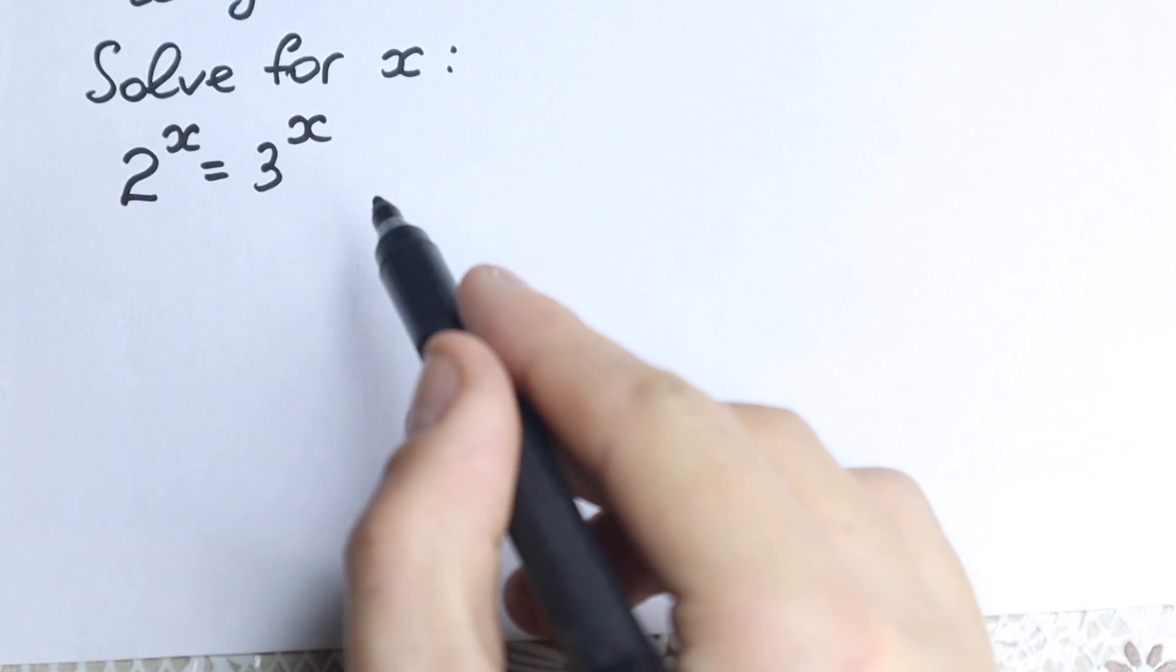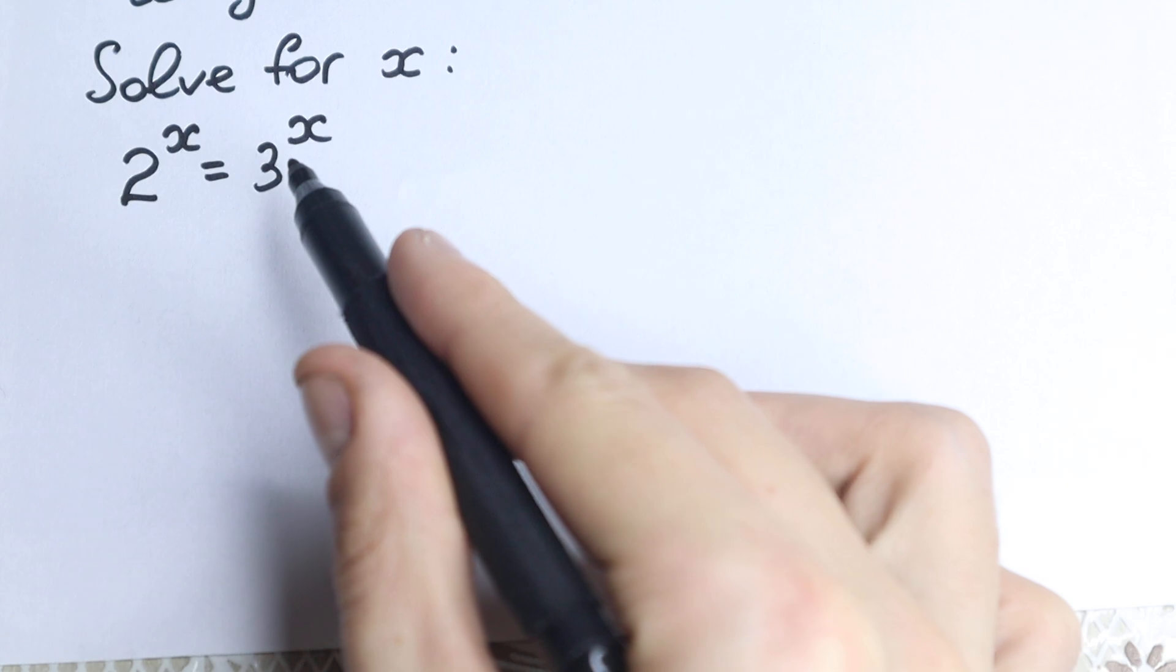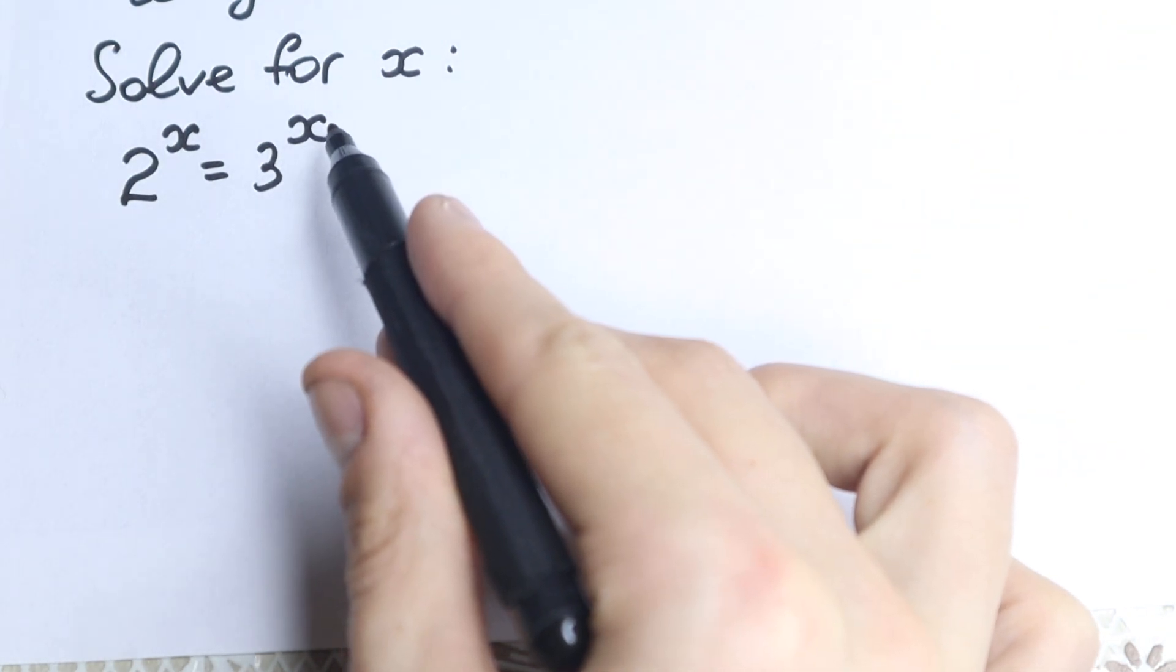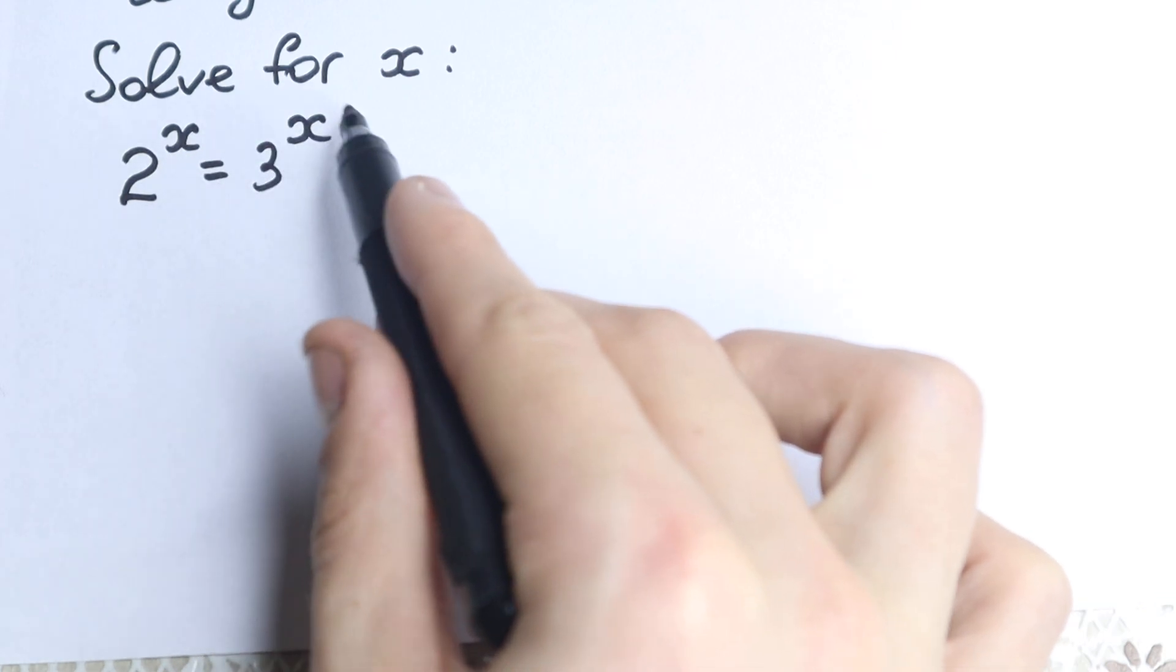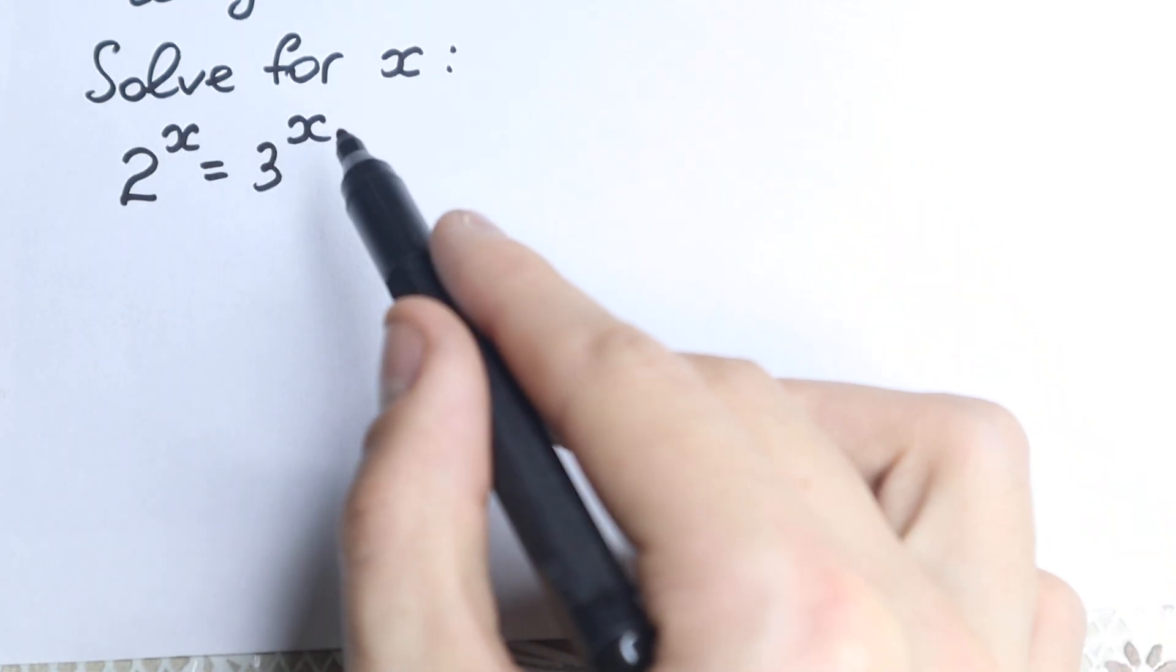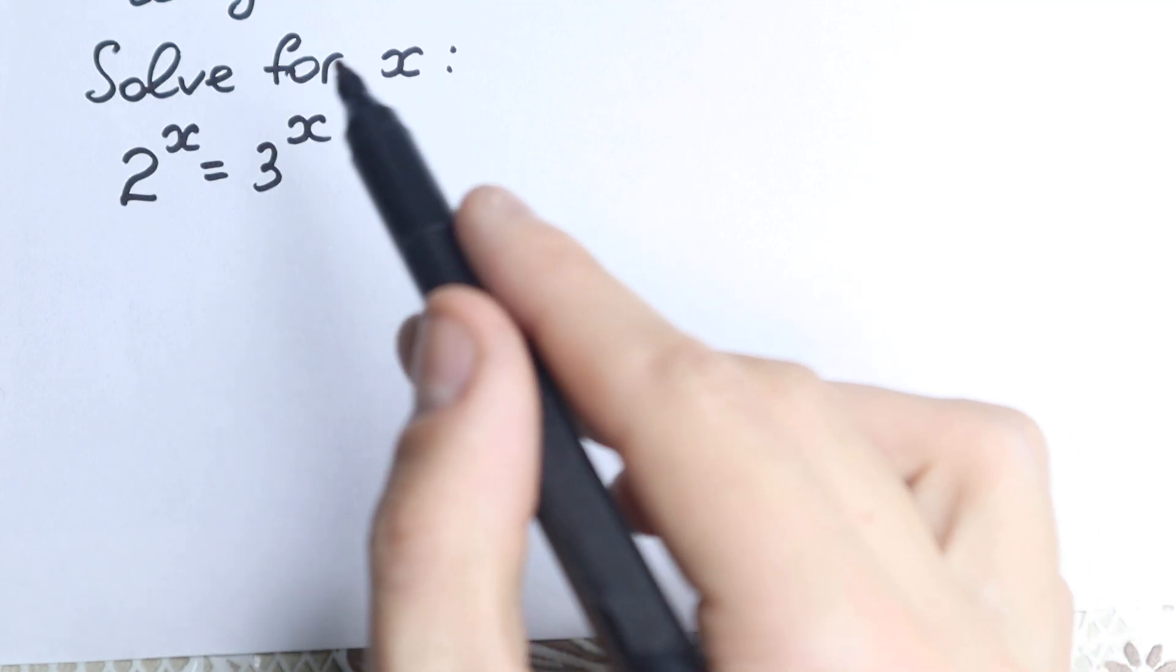It looks like a weird challenge because we have 2 to the x equal to 3 to the x. What can we say about our x? How is it possible? Right here 2, right here 3. How can we find our x? It's a really great and tricky challenge and I want to solve this right now.